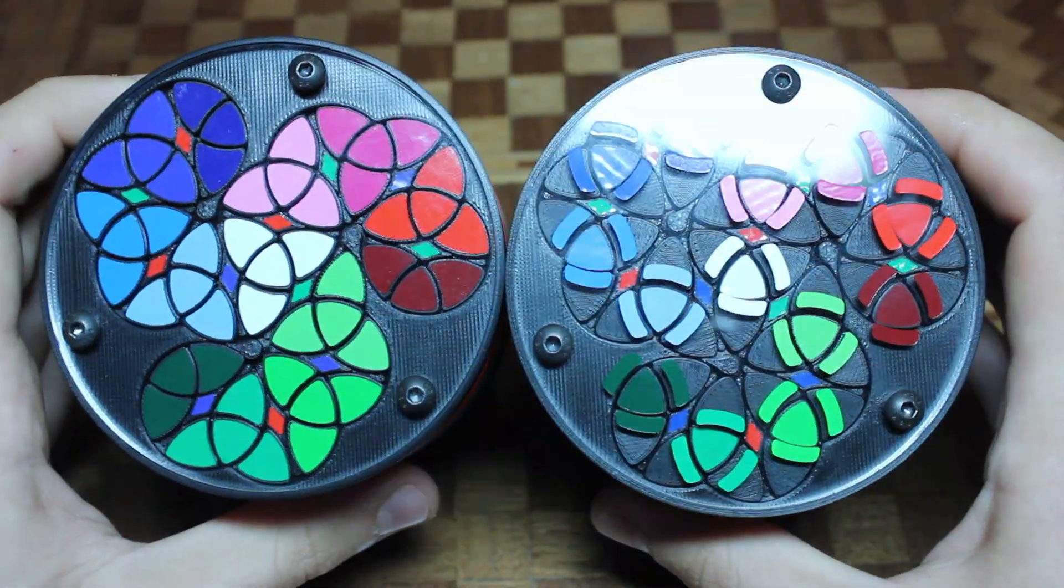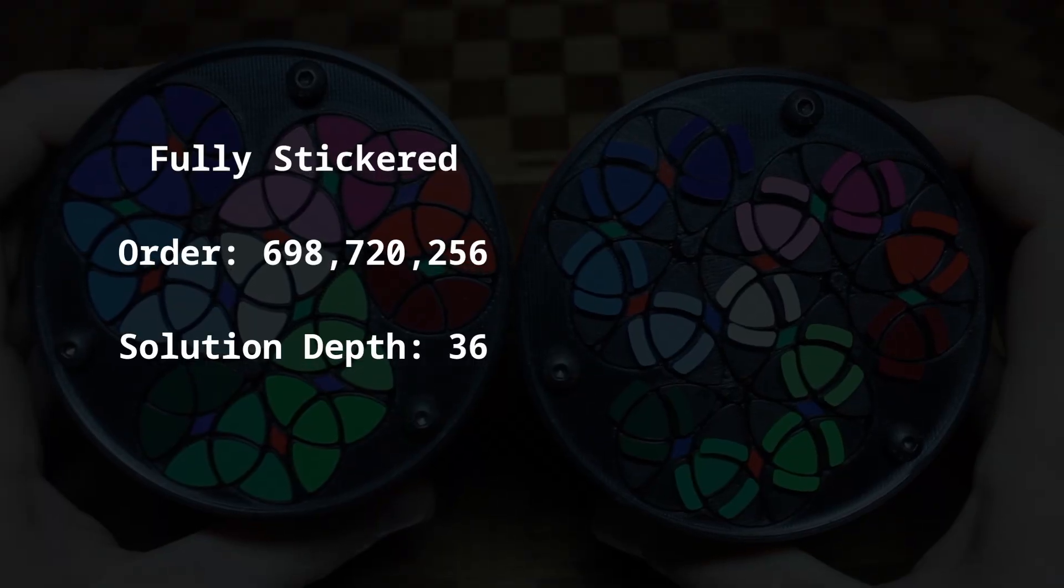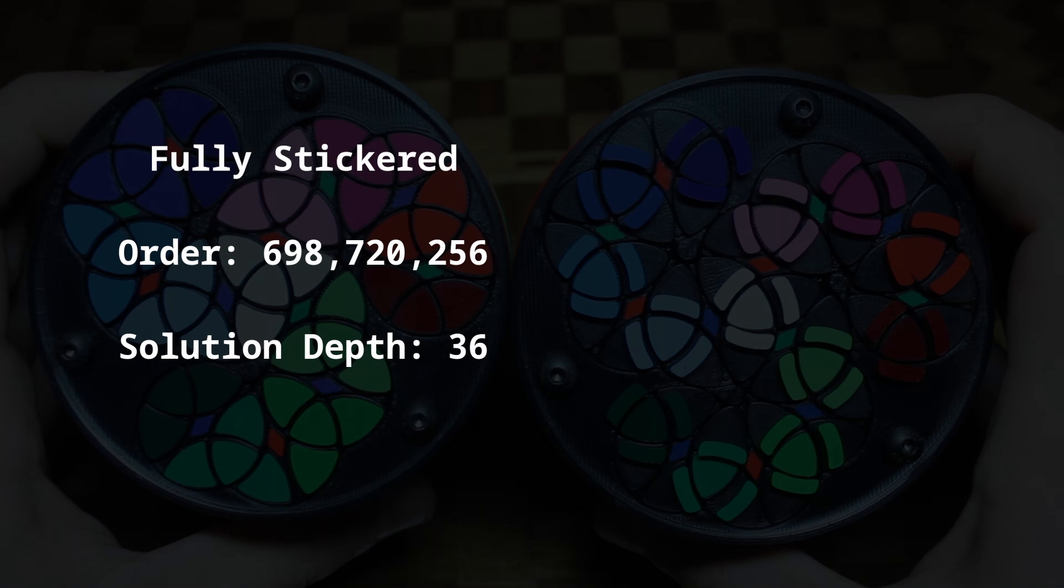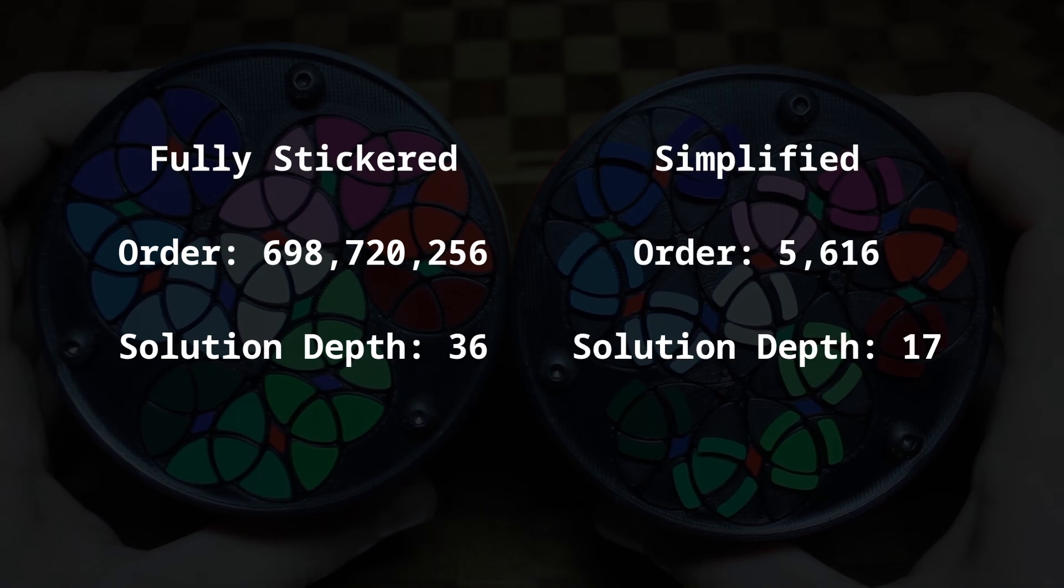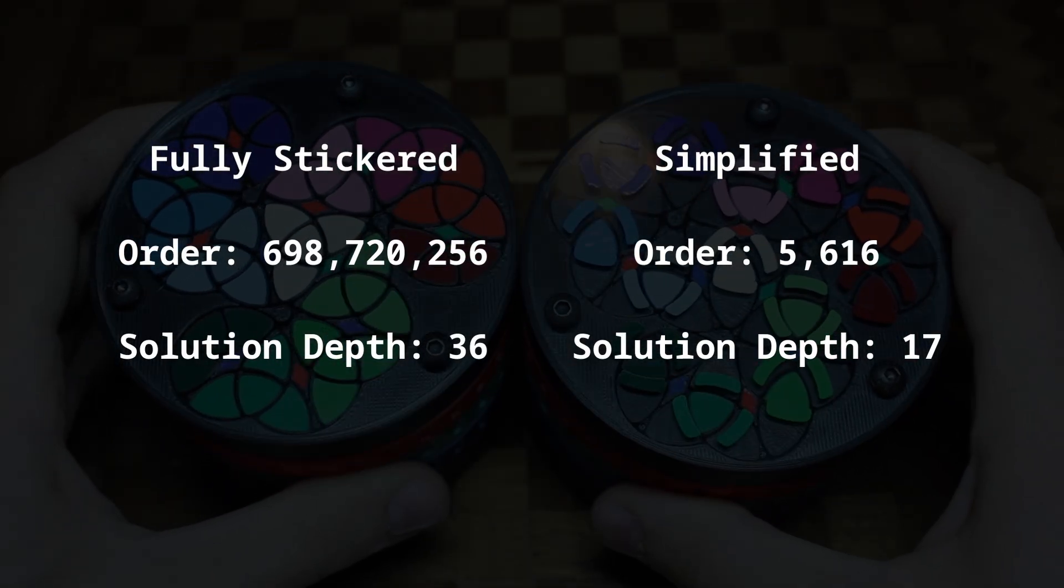The fully stickered version has about 700 million possible positions and a maximum solution depth of 36, while the simplified version has 56,016 possible positions and depth 17.